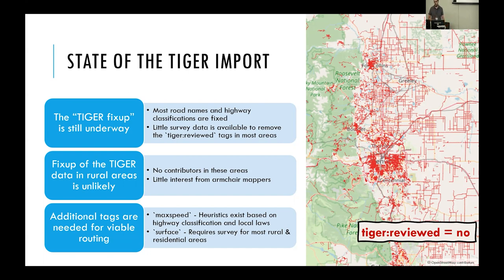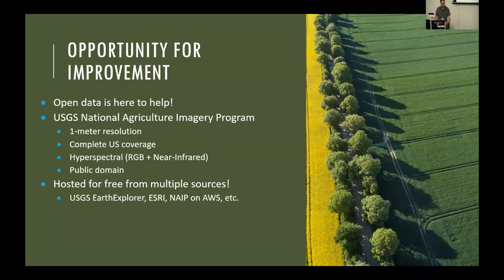So if we want to use OSM to improve routing and have OSM-based routers that work really well, especially in rural areas, we really need additional tags other than just the road names and highway classifications we have right now. One of them is max speed, but there exist tools that can improve that using local laws. But road surface is a big one I was focusing on — knowing whether or not roads are paved or unpaved. The USGS, the United States Geological Survey, has their National Agricultural Imagery Program, which provides one-meter resolution imagery, RGB and near infrared, with complete United States coverage, and it's in the public domain. This is a really big opportunity to use satellite imagery to improve OSM specifically with road surface, and it's hosted for free from a bunch of different sources.